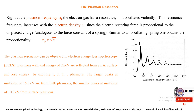In EELS, if the peaks are at multiples of 15.3 electron volts, such plasmons are called bulk plasmons. But if the peaks are at multiples of 10.3 electron volts, such plasmons are called surface plasmons.